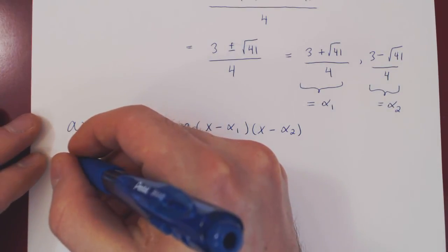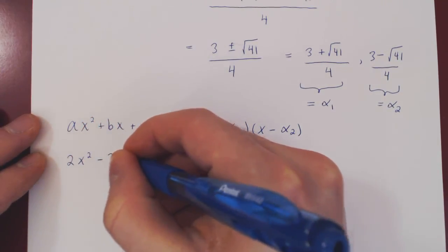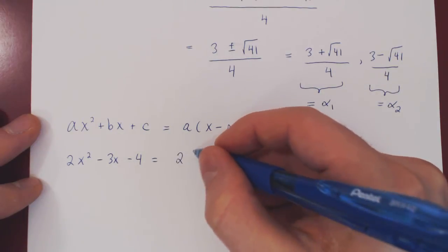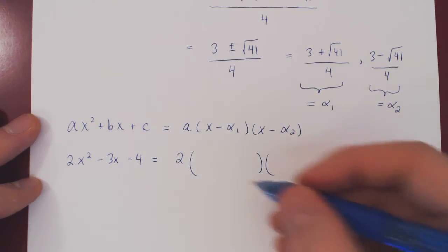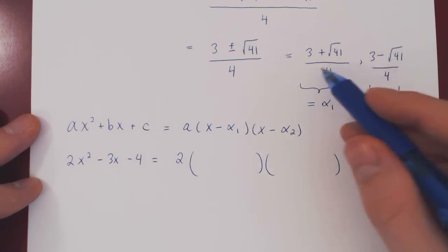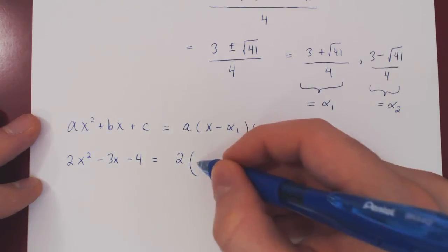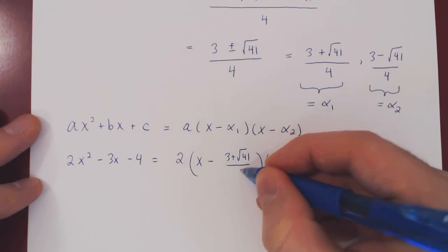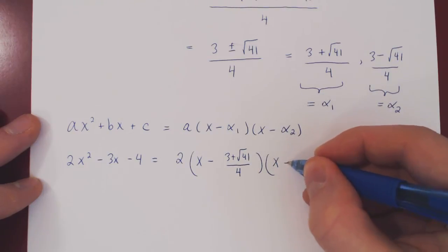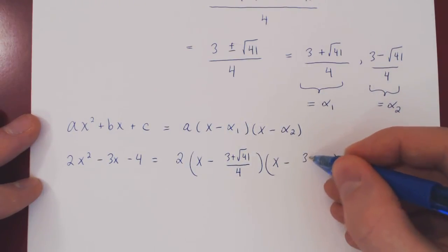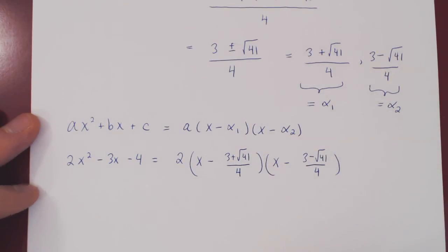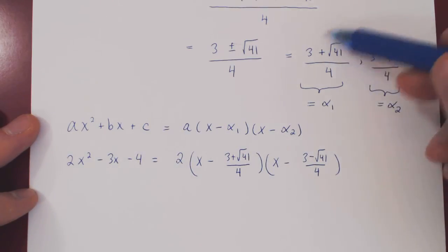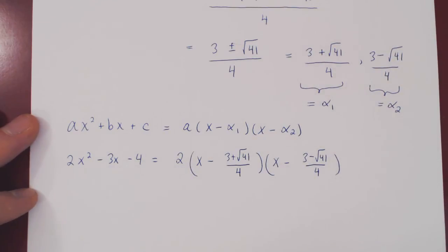So let's factor this polynomial now that we have the two zeros. If the question is: factor completely over the real numbers 2x squared minus 3x minus 4 — first, pull out the coefficient of x squared, which is 2, giving two factors. So we get 2 times x minus all of 3 plus root of 41 over 4, times x minus all of 3 minus root of 41 over 4. This is how you factor a quadratic polynomial using the well-known quadratic formula: find the zeros first, then factor. And that's it!